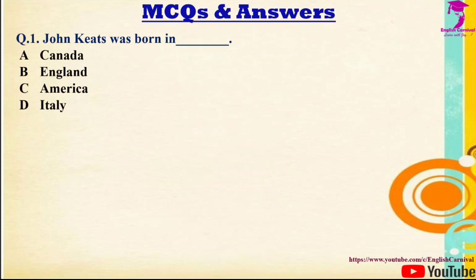Question 1: John Keats was born in — Options: A) Canada, B) England, C) America, D) Italy. Correct answer is B — England.